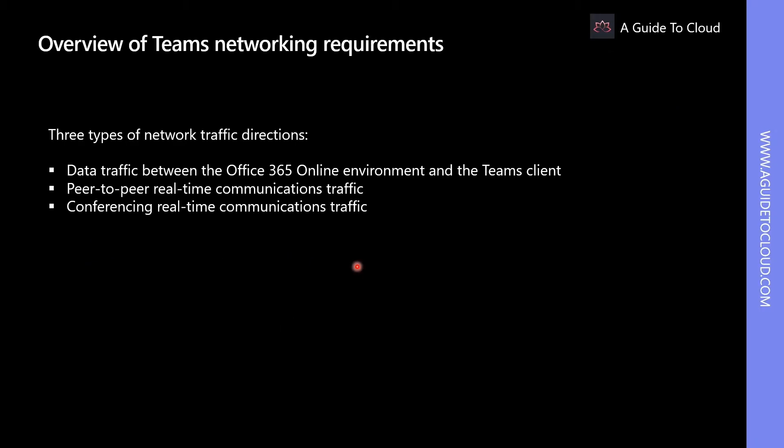Microsoft Teams utilizes three types of network traffic directions: data traffic between the Office 365 online environment and the Teams client, peer-to-peer real-time communication traffic, and conferencing real-time communication traffic. This impacts the network data flow in two levels — the traffic flow between the Teams client directly in peer-to-peer situations, and between the Office 365 environment and the Teams clients for meetings.